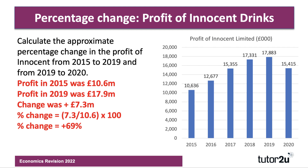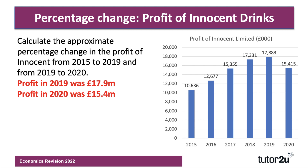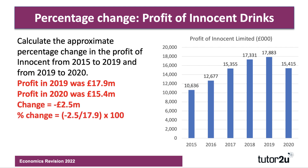In 2020, profits dropped from 17.9 million to 15.4 million, rounding down, so the change was minus 2.5 million. The original was 17.9 million — the 2019 data. So the change is minus 2.5 divided by 17.9, multiplied by 100, which gives a change of minus 14%. That's a 14% drop in profits in one year, although profits were still effectively about 50% higher than they were in 2015.